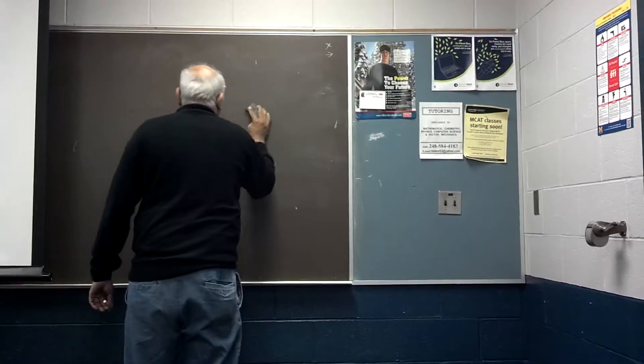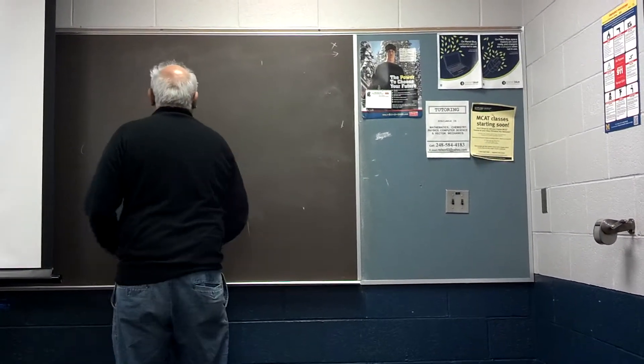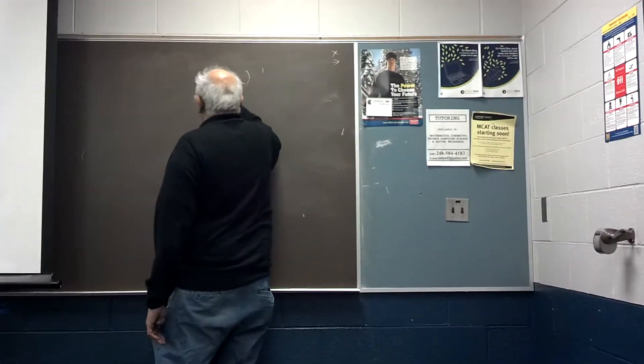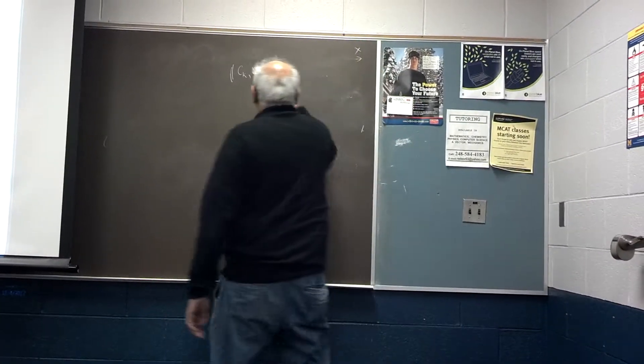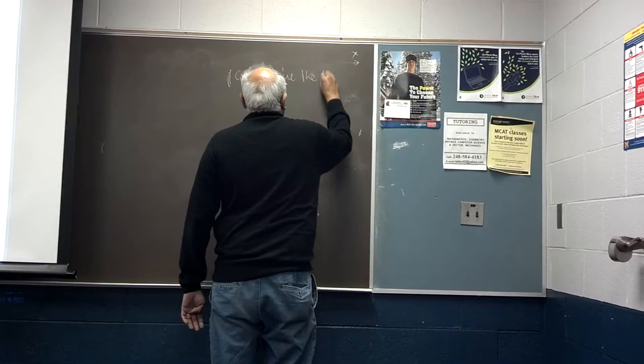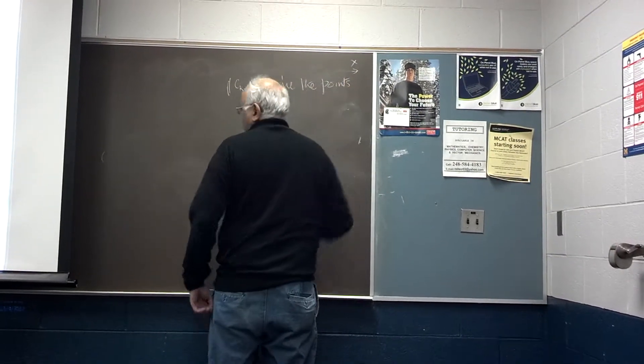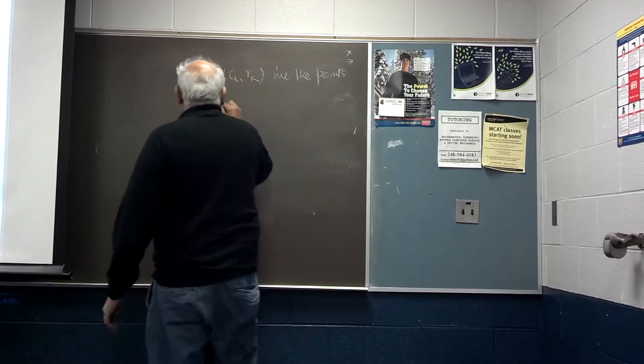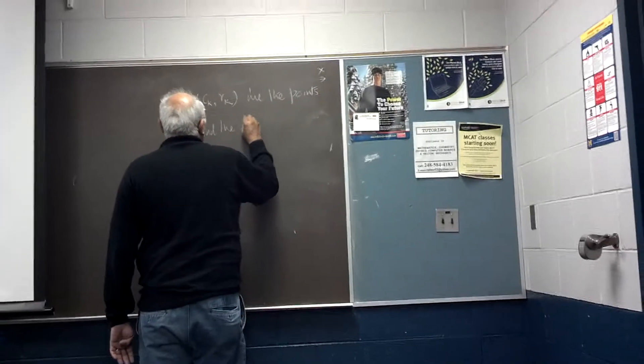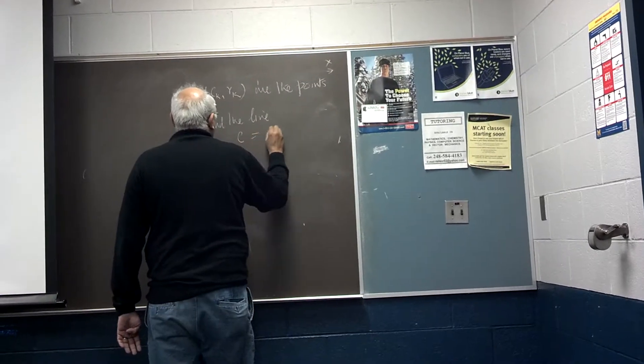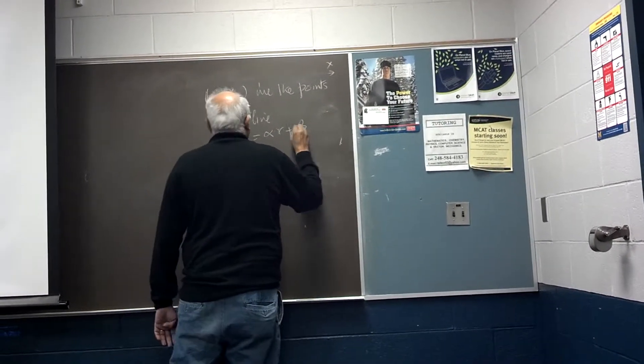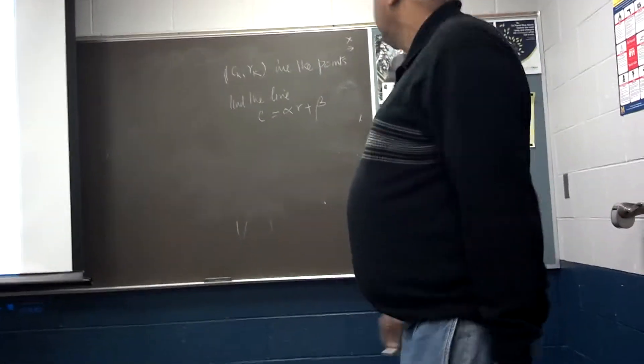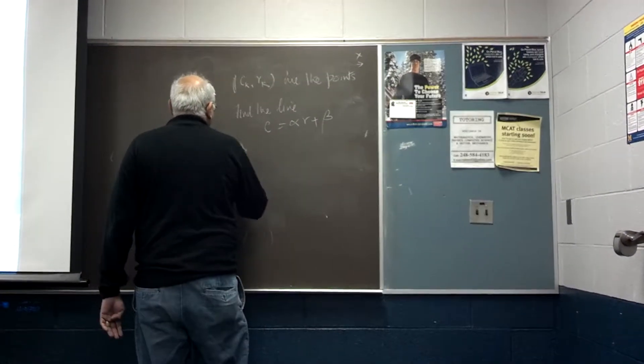So I'm going to write C as a function of r, and I'm going to draw a central line. I'm just going to go only at the left end, and then you'll write the code to do the right thing also. So find the line. If CK, RK are the points, and I want to find the curve C equals alpha plus beta r, the way you do that is sigma CK.